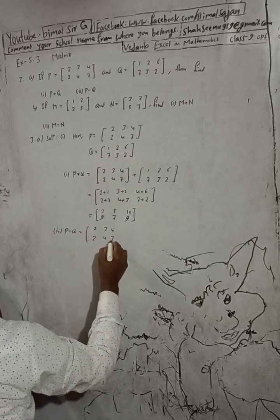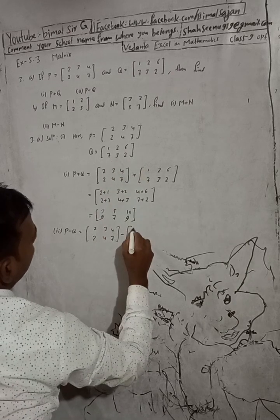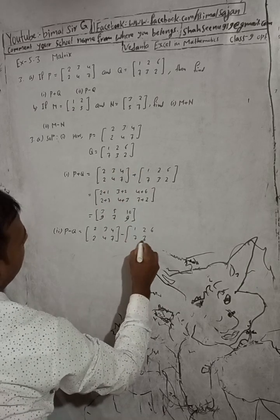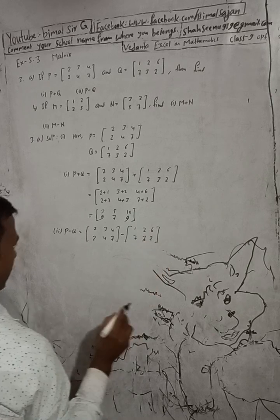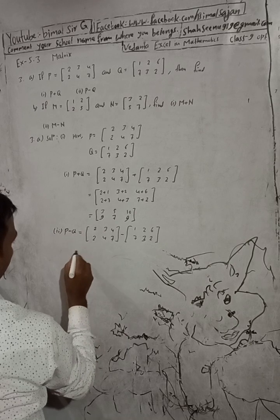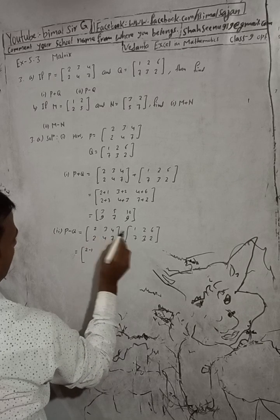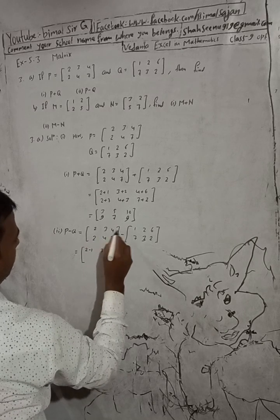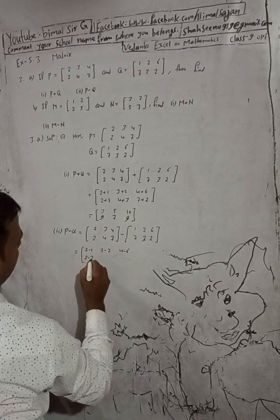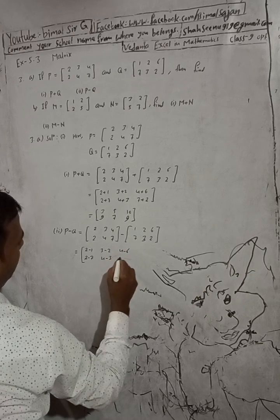P minus Q is equal to [2, 3, 4 / 2, 4, 7] minus [1, 2, 6 / 7, 3, 2]. So: 2 minus 1, 3 minus 2, 4 minus 6, 2 minus 7, 4 minus 3, 7 minus 2.